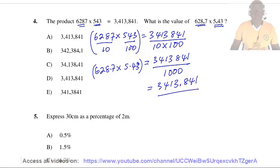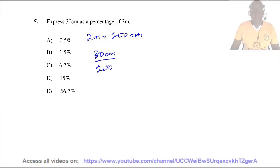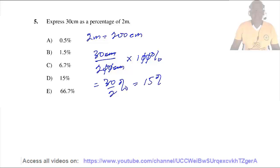So the answer is 3413.841, moving the decimal point 3 places to the left. Question 5: Express 30 centimeters as a percentage of 2 meters. Since 1 meter equals 100 centimeters, 2 meters equals 200 centimeters. So 30 cm as a percentage of 200 cm equals 30 over 200 times 100%, which equals 15%. So the answer is D.